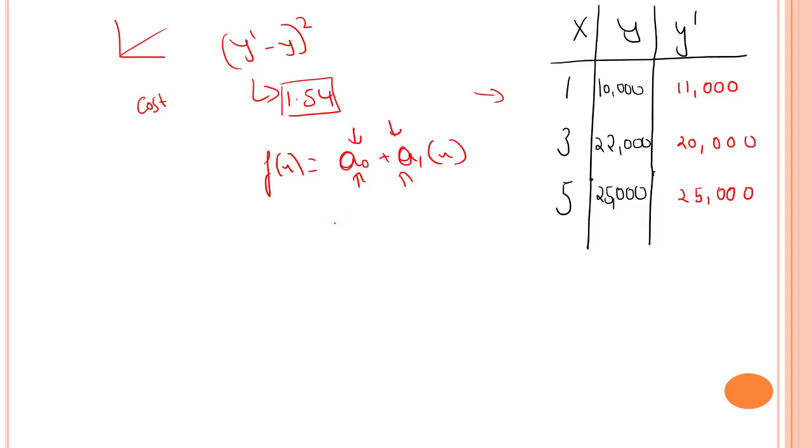So, whenever we want to predict for a new value, a0 and a1 value would be fixed. And for x, let's say we want to predict it for six years. So, if the a0 value is 0.5 and a1 value might be 10,000.